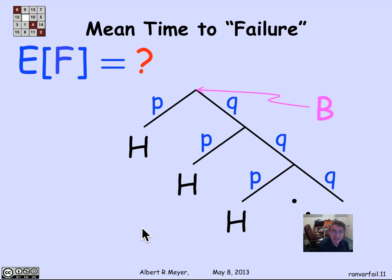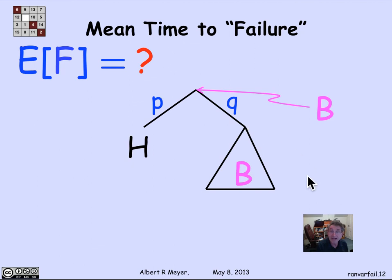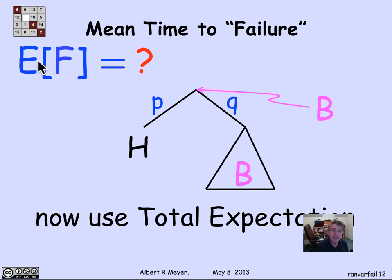Looking at the structure of this tree, it's an infinite tree but very repetitive. If we call the tree B, the subtree after a tail is simply a copy of B. So we have a nice recursive, but finite, description of this whole infinite tree: B is a tree with a left branch of probability P ending in a leaf, or a right branch with probability Q followed by a repeat of tree B. We can now apply total expectation to find the expectation of F, the expected number of steps until we take the left branch to an H.